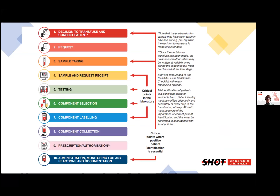Transfusion is a complex multi-step process, depicted in a 10-step diagram in the 2020 SHOT report. There are many people involved — from the medic making the decision to transfuse and gaining consent, through blood ordering and sample taking, all laboratory processes, collection and administration of the component, to monitoring the patient for reactions. Because this is complex, there are opportunities for error at every step. Adding the complexity of managing transplant patients, often with shared care between different organisations, it's easy to see how things can go wrong.